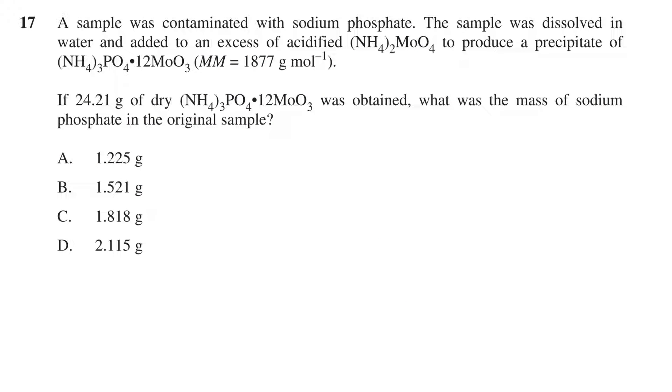A sample was contaminated with sodium phosphate. The sample was dissolved in water and added to an excess of acidified ammonium molybdate to produce a precipitate of ammonium phosphomolybdate, molar mass equal to 1877 grams per mole. If 24.21 grams of dry ammonium phosphomolybdate was obtained, what was the mass of sodium phosphate in the original sample?